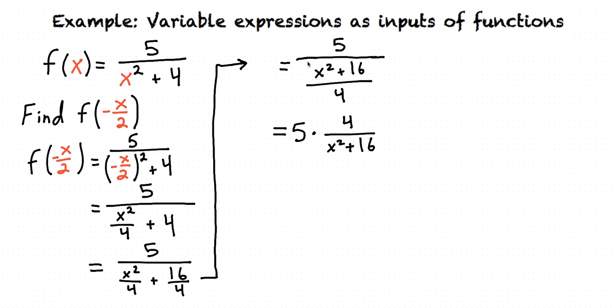This looks like 5 times 4 over x squared plus 16. So again, dividing by a fraction is the same as multiplying by the reciprocal of the fraction, which means you switch the numerator and denominator. Now that it's written like this, we can multiply this 5 and 4 to get a final answer of 20 over x squared plus 16. And at this point, it can't be simplified any further. So this is our final answer.